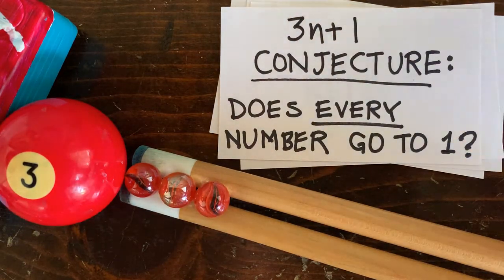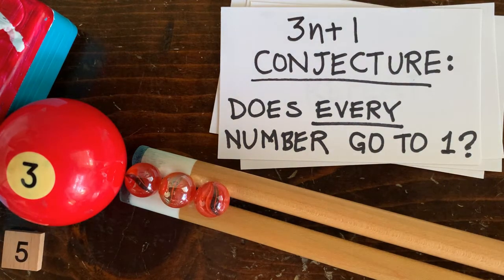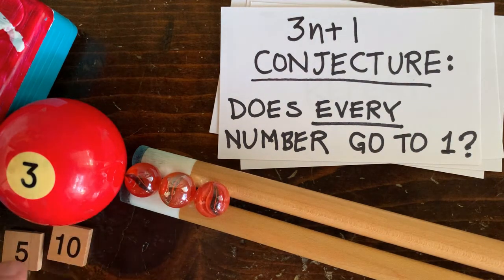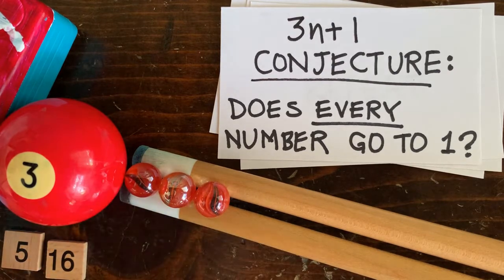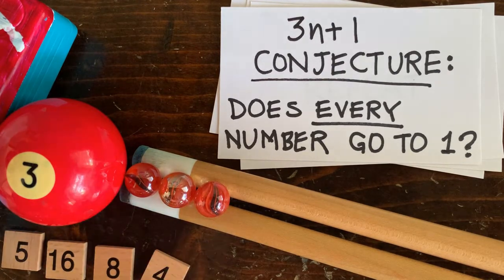Say we start with 5. 5 is odd, so we multiply it by 3 and add 1, which gives us 16. 16 is even, so we cut it in half to 8, which we cut in half to 4, then 2, then 1, and we're done.